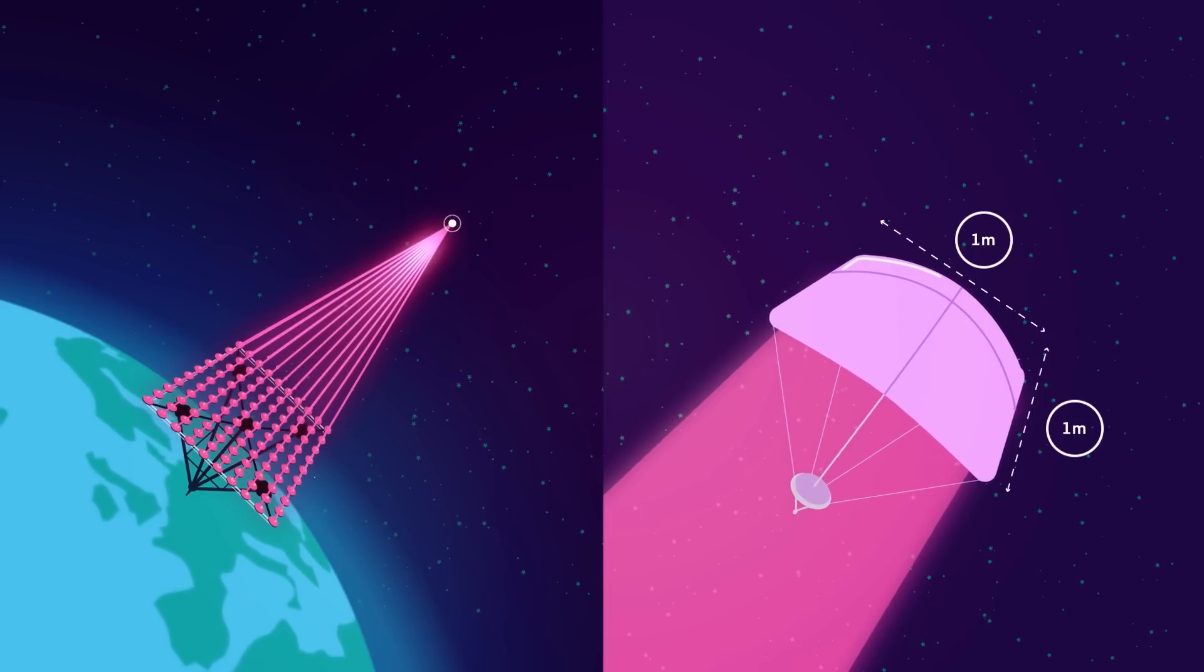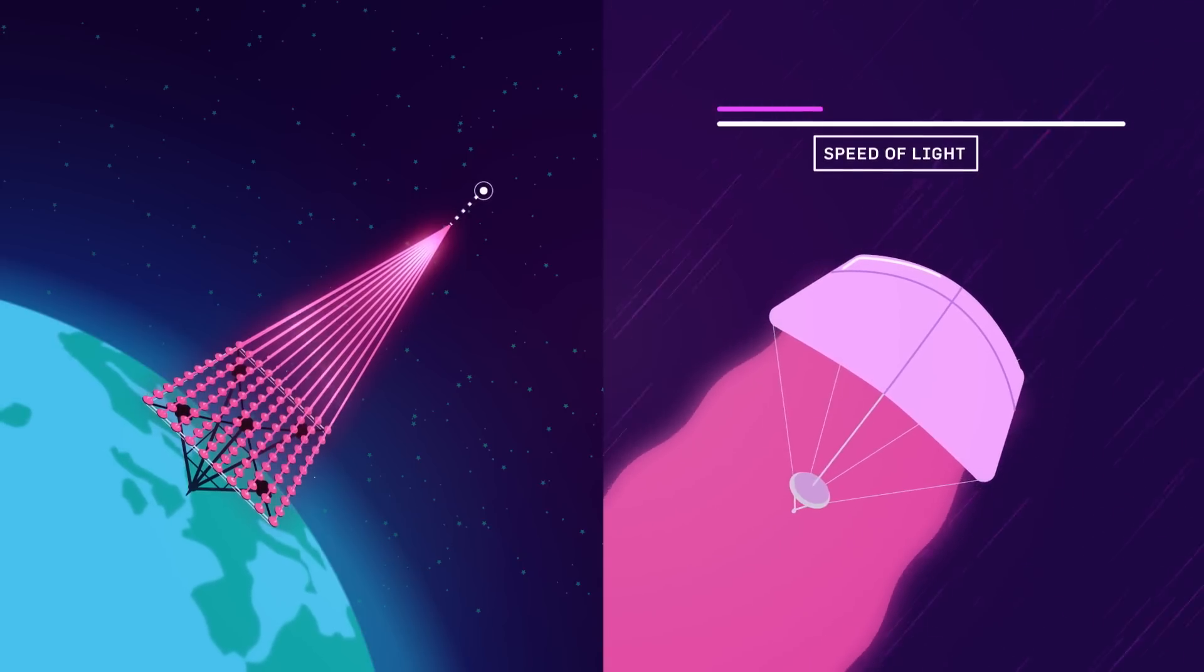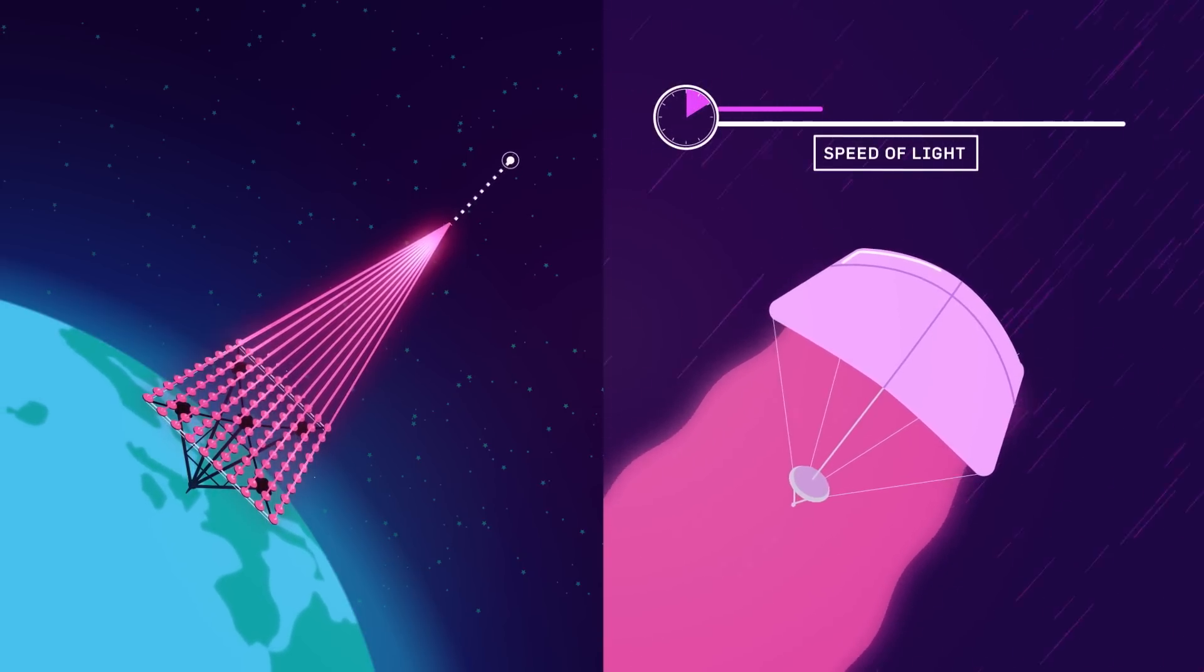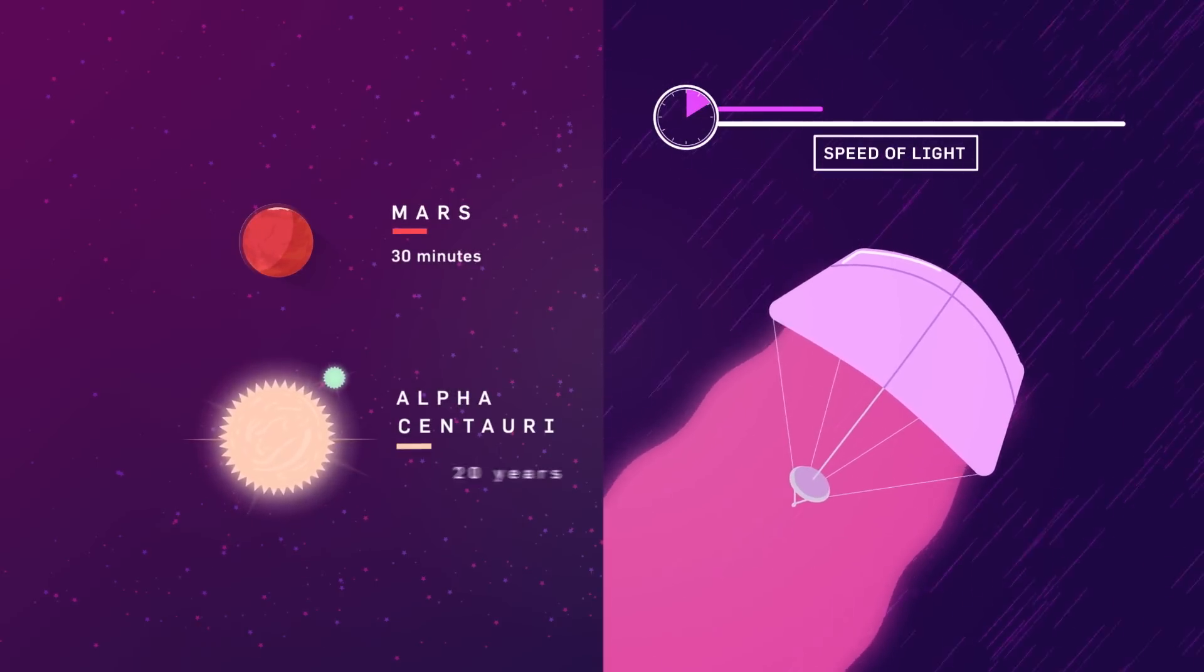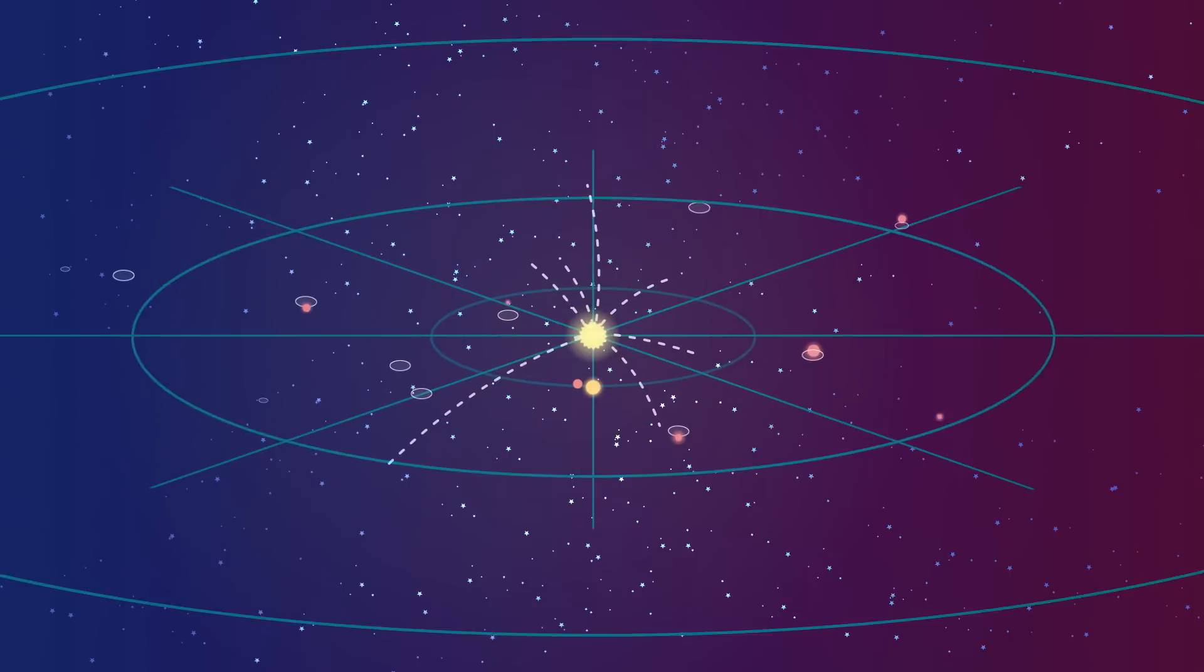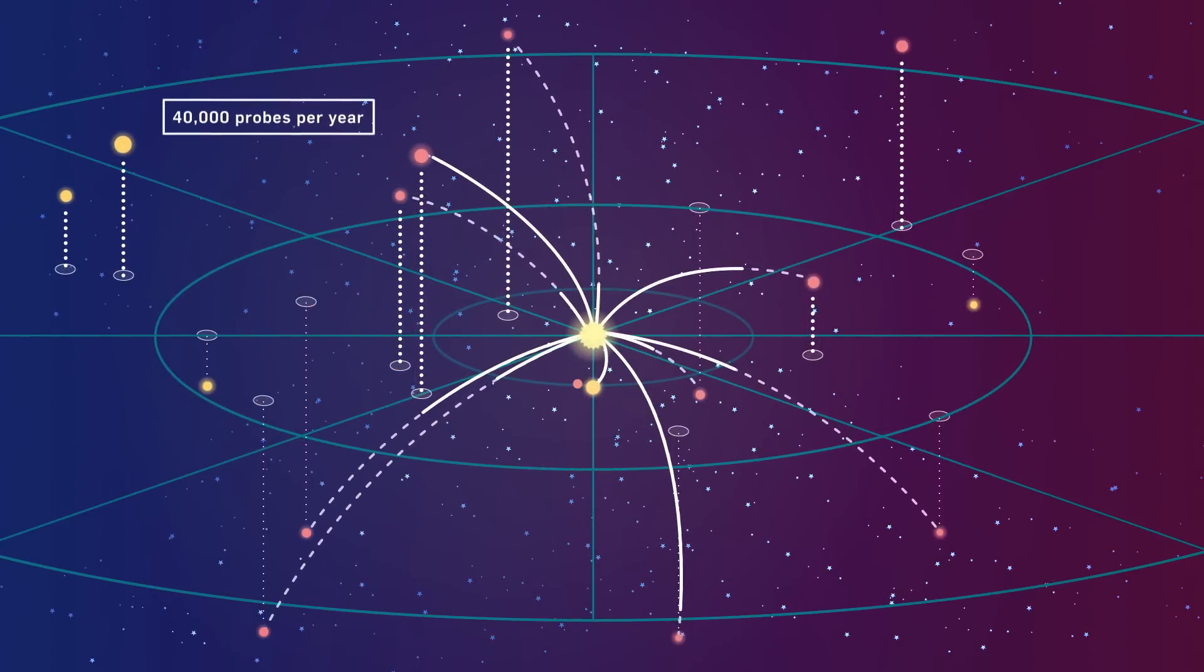The scientists calculate that this would accelerate the tiny probe to more than 25% of the speed of light after about 10 minutes of illumination. At that rate, it could reach Mars in 30 minutes and Alpha Centauri in about 20 years. The laser array could launch roughly 40,000 relativistic wafer-sized probes per year.